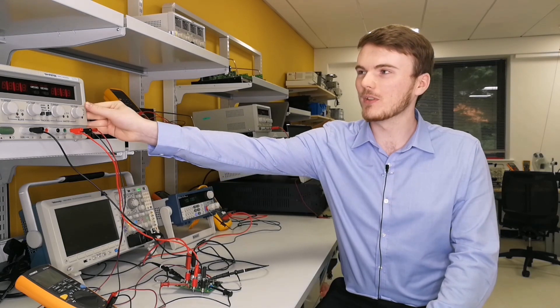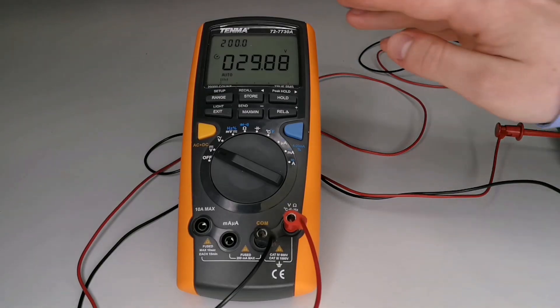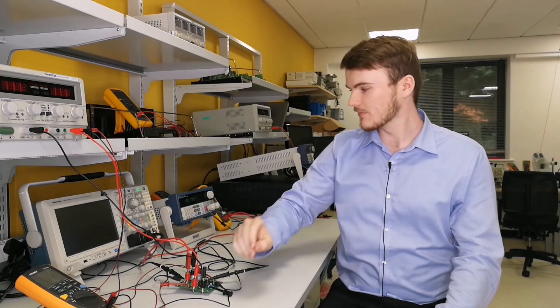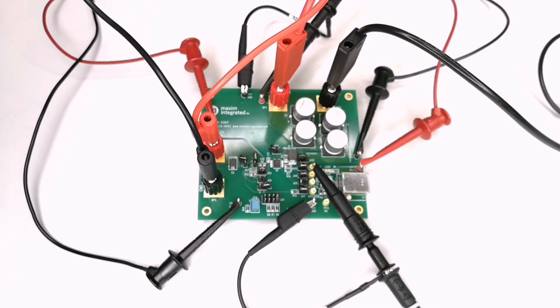For this demo I'll be using a variable DC power supply, an oscilloscope, a multimeter, a programmable DC load, and the star of the show, the MAX17561.